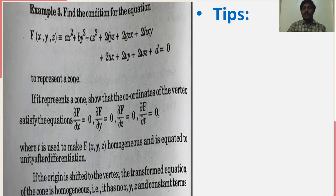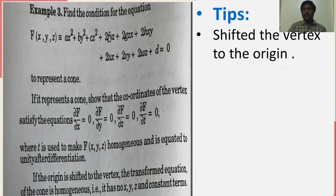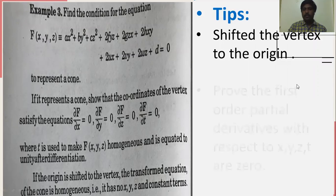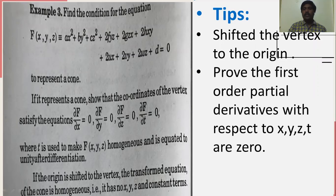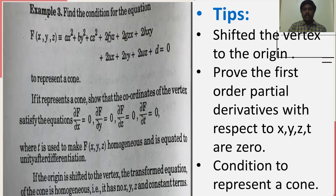To solve this, I have given some tips. First, we have to shift the vertex to the origin. Second, the first order partial derivatives with respect to x, y, z, t are 0. Third, by combining all the equations, we are going to find the condition to represent a cone.